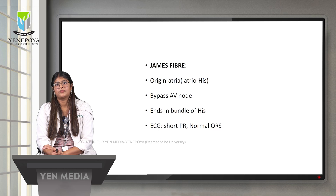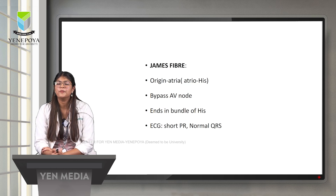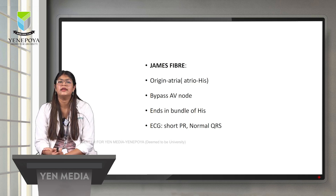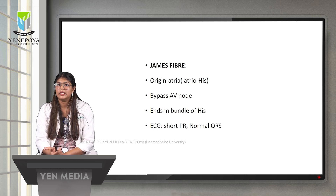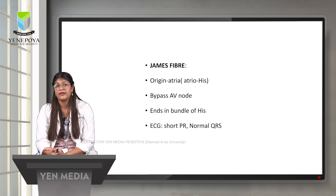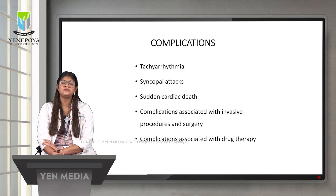James fibers originate from the atria and are located between the atria and the bundle of His — hence termed atrio-His. In James fibers, impulses can bypass the AV node, producing a short PR interval. However, since the pathway ends in the bundle of His, conduction through the ventricles occurs normally. As a result, the QRS complex is normal with no delta wave. In summary: Mahaim fibers show normal PR interval with delta waves, while James fibers show short PR interval with normal QRS and no delta wave.